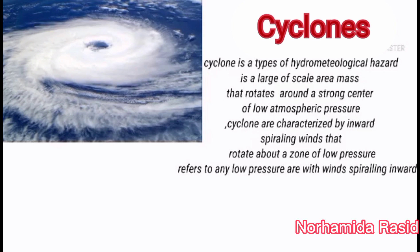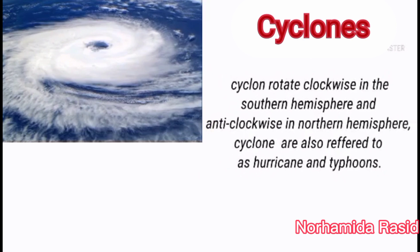Cyclones are a type of hydrometeorological hazard. A cyclone is a large-scale area of air that rotates around strong centers of low atmospheric pressure. Cyclones are characterized by inward spiraling winds that rotate above the zone of low pressure. The term refers to any low-pressure system with winds spiraling inwards.